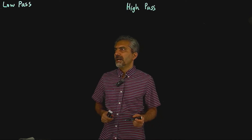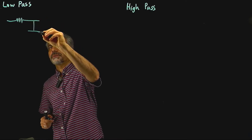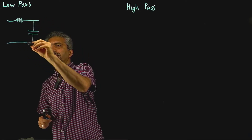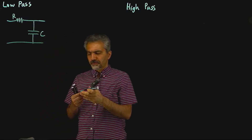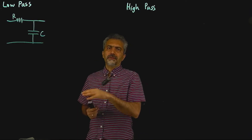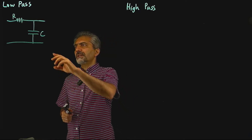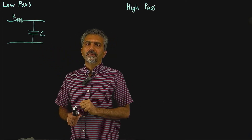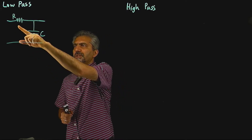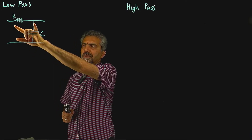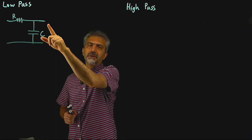Let's start with low-pass filters and a very simple circuit. We kind of discussed this circuit before. What makes this circuit a low-pass filter, intuitively speaking, is the fact that a capacitor at low frequencies is going to be an open circuit, and therefore there's no current passing through the combination of R and C, and the voltage across the resistor stays the same, which means low frequencies are going to pass intact.